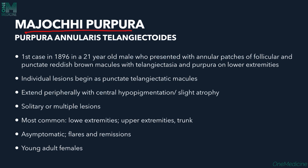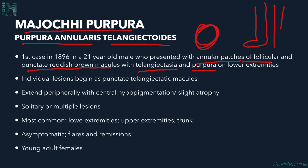Majocchi's disease, also called purpura annularis telangiectodes, presents as annular lesions. The first case was described in 1896 in a 21-year-old male who presented with annular patches of follicular and punctate reddish-brown macules with telangiectasia and purpura on the lower extremities.